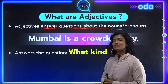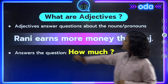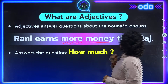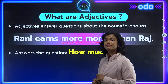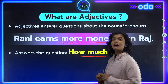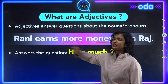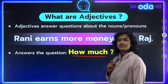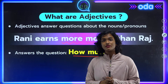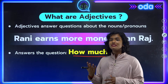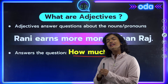Let's take one more example: 'Rani earns more money than Raj.' Our noun is 'money' and our adjective is 'more.' This answers the question 'how much' — how much money does Rani earn compared to Raj. We have learned that adjectives are words used to modify or describe nouns or pronouns; they answer questions about the nouns and tell us more about size, quality, quantity, and so on.